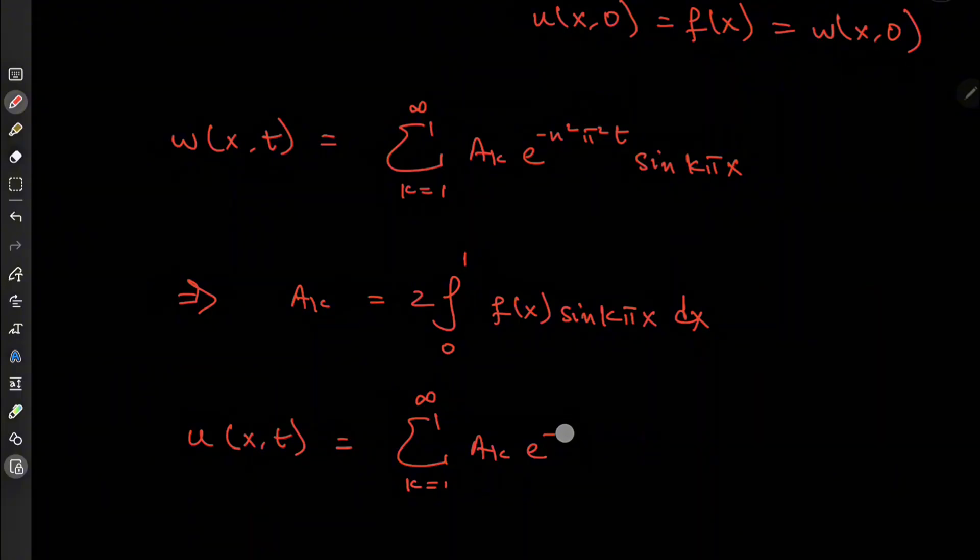So I could factor something out here. So we have e to the minus t times, what exactly? Oh yeah, beta plus n squared pi squared, which looks dope, times the sine of k pi x.